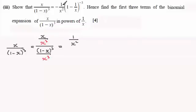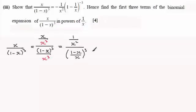Now for the (1 minus x) all cubed over x cubed, because both of these are cubed I can think of this as just (1 minus x) all divided by x, the whole lot cubed. So what we've got is 1 over x squared out the front, multiplied by 1 over [(1 minus x)/x] all cubed.